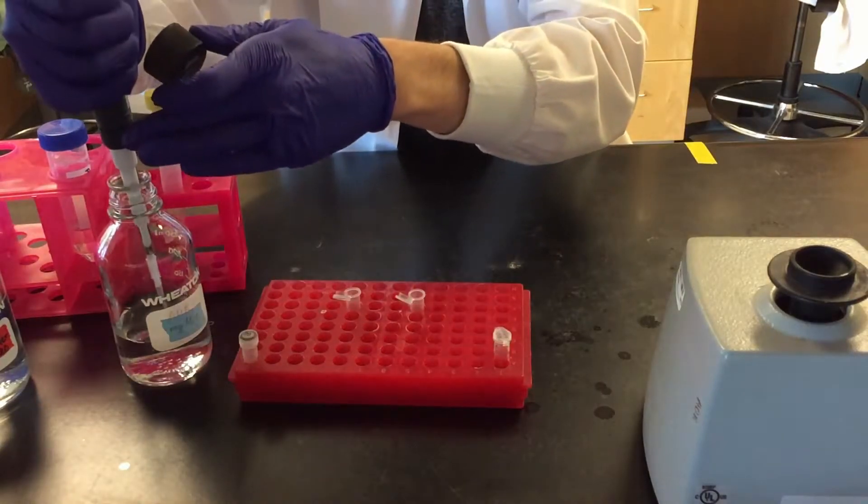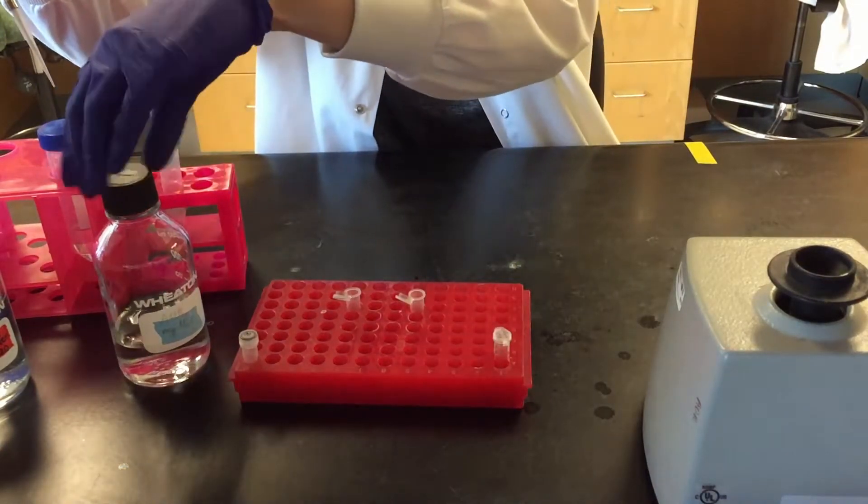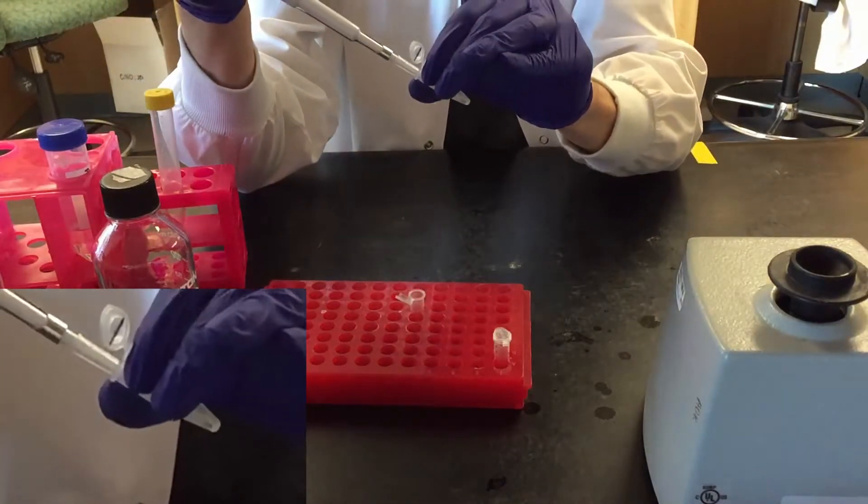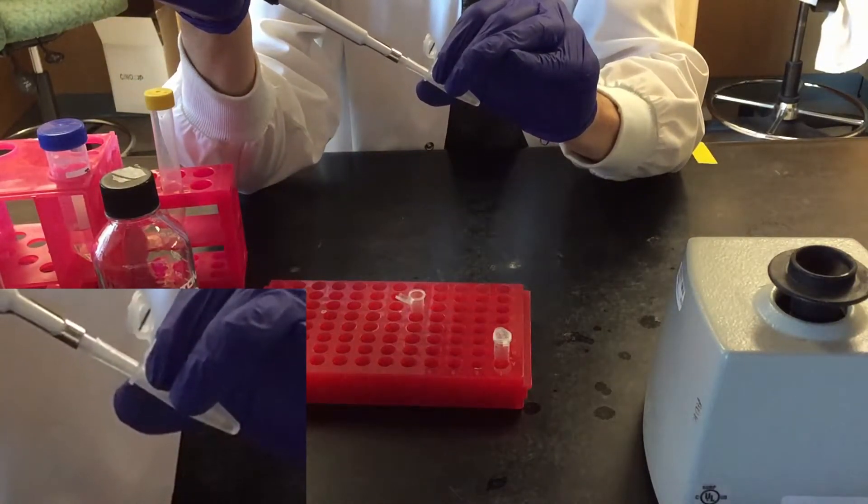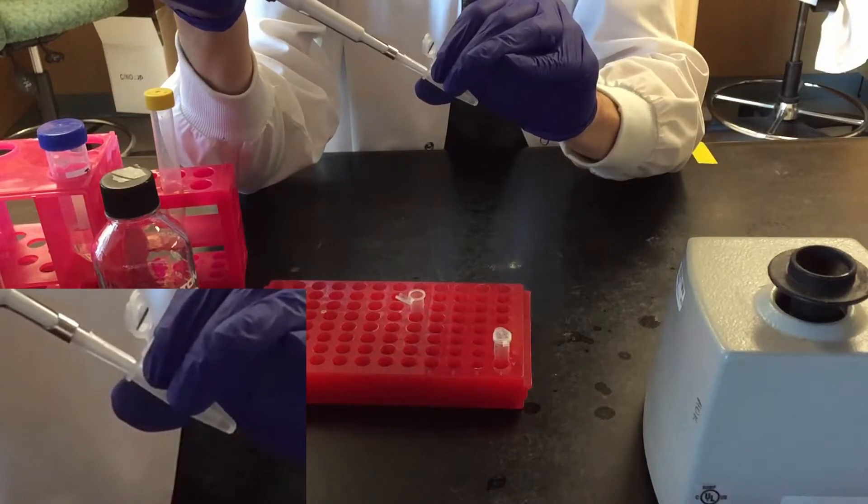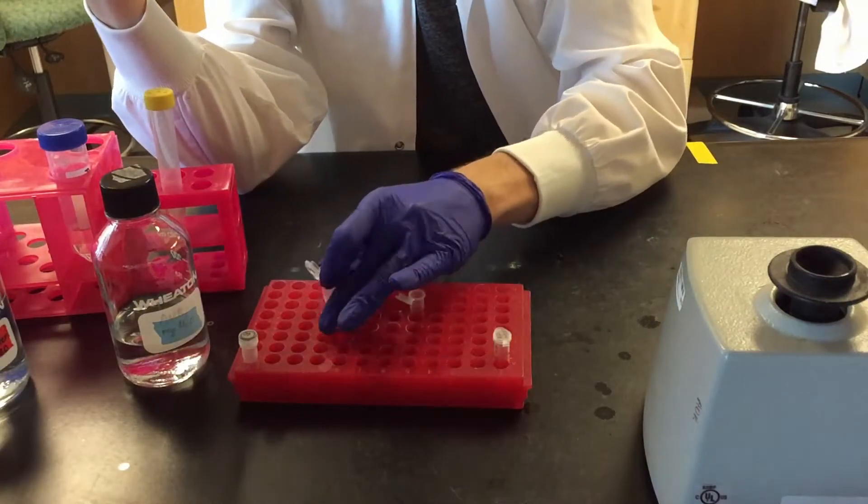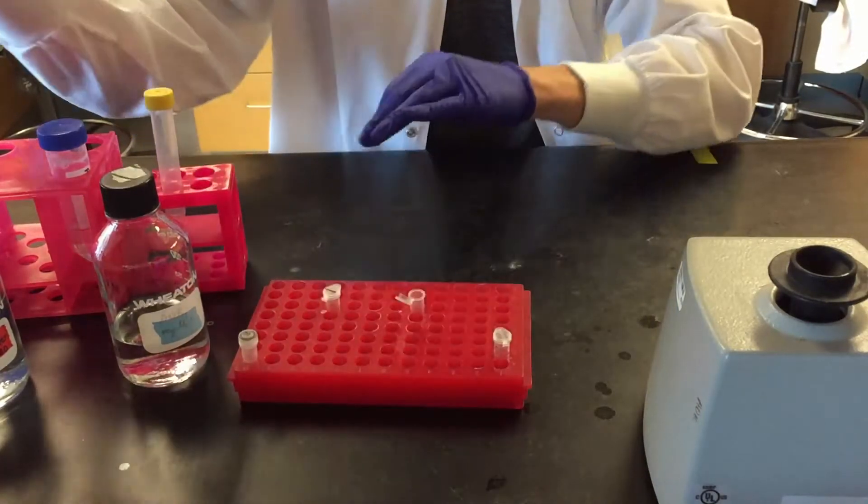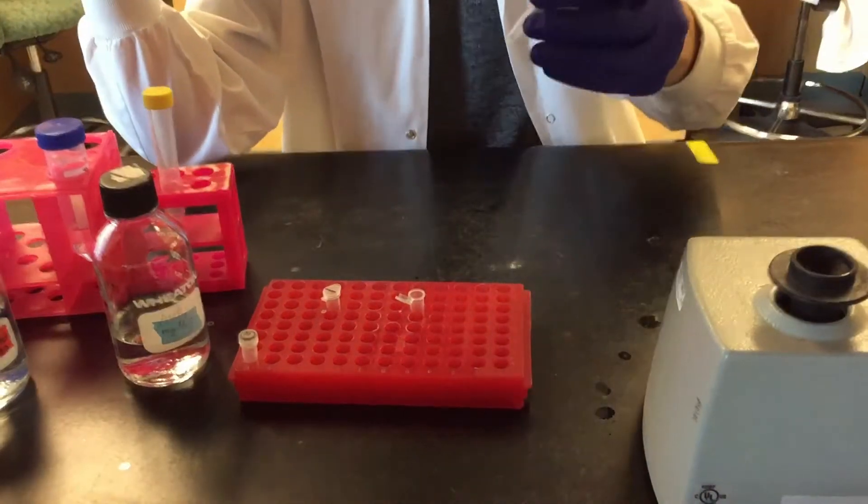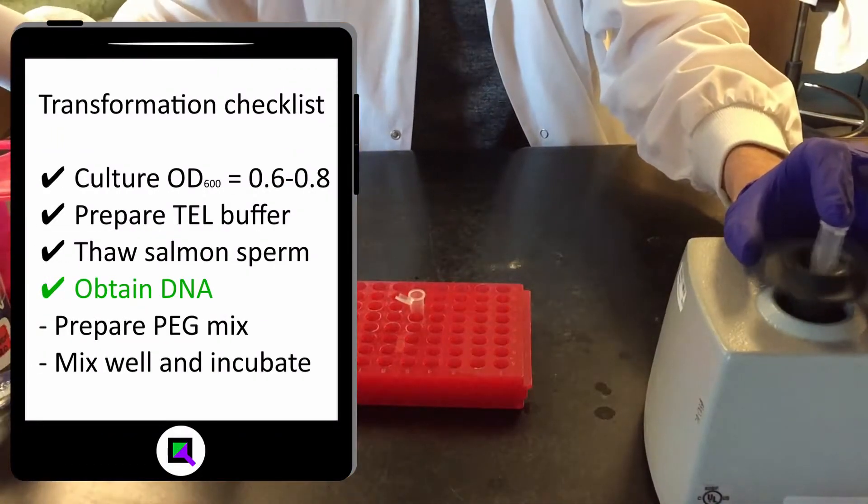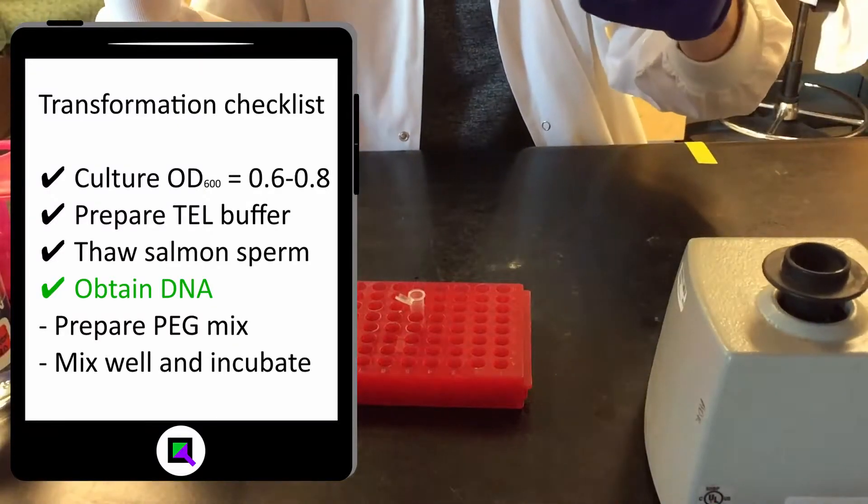Add 5 to 10 microliters of water to the negative control. Add 5 to 10 microliters of the plasmid or PCR product to be transformed.